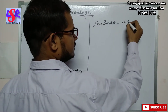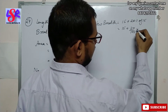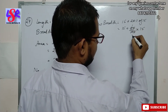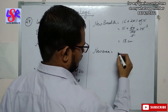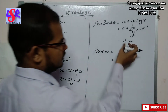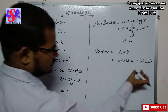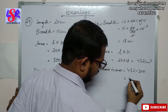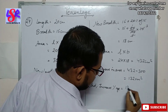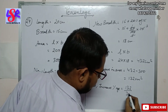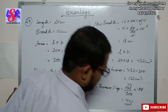The new breadth is 15 plus 20 percent of 15, that is 15 plus 20 upon 100 into 15, which gives 15 plus 3, so 18 centimeter as the new breadth. The new area is 24 into 18, which equals 432 centimeter square. The increase in area is 432 minus 300, that is 132 centimeter square. The increase percentage is 132 upon 300 into 100, and on cancelling we get 44 percent as the required answer.